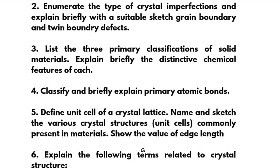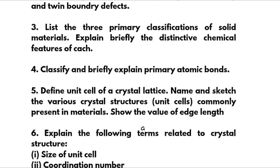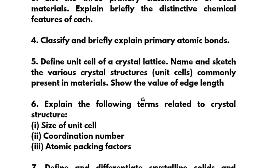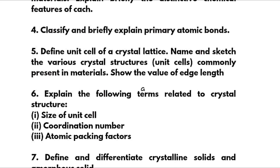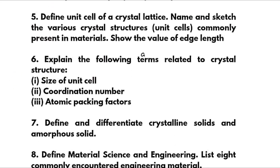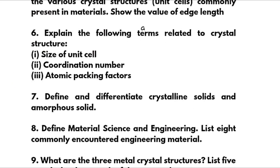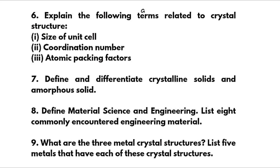Fourth: list the three primary classifications of solid materials and expand briefly the distinctive chemical features of each. Fifth: classify and briefly explain primary atomic bonds; define unit cell of a crystal lattice; name and sketch the various crystal structures commonly present in materials and show the value of edge length. Sixth: explain the following terms related to crystal structure — size of unit cell, coordination number, and atomic packing factor — these are super important ones.